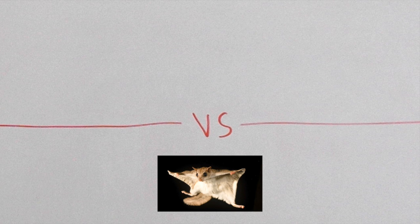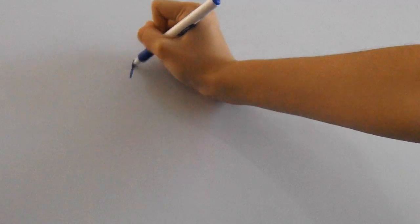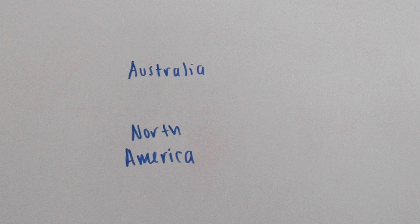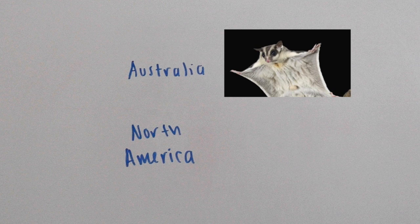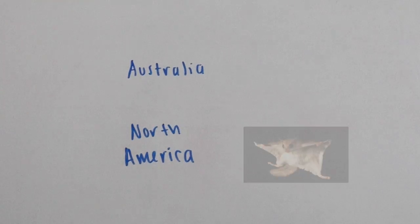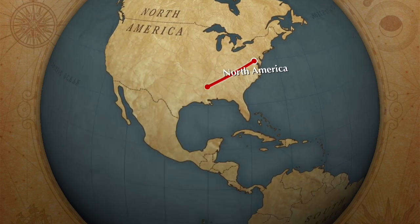Here's a very common example of convergent evolution and analogous structures. The sugar glider in Australia and the flying squirrel from North America. Both of their body plans allow them to glide through the air, yet they do not have a recent common ancestor.